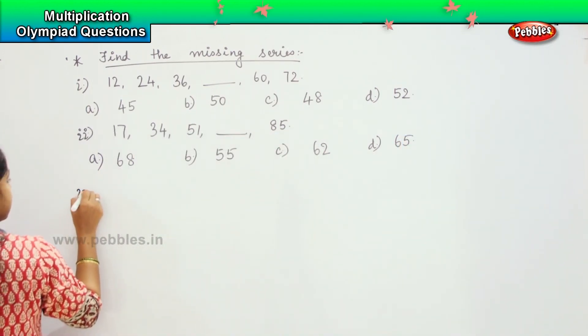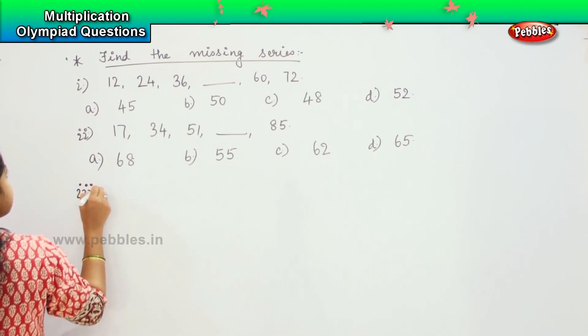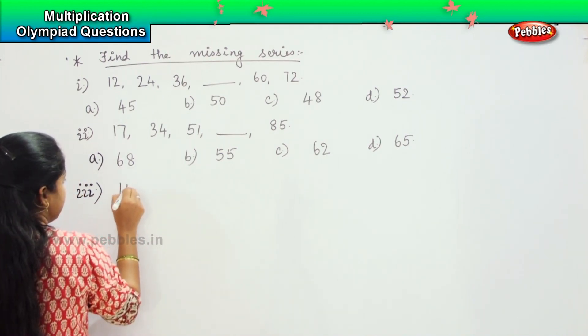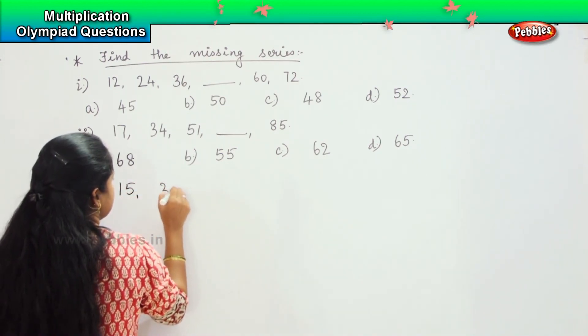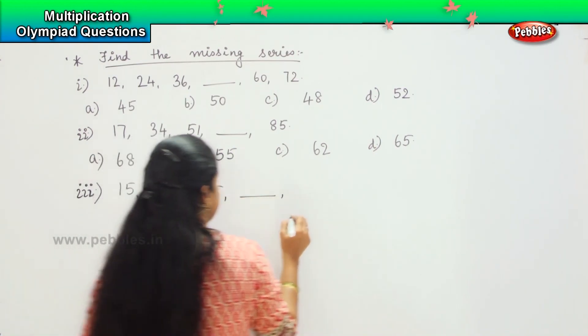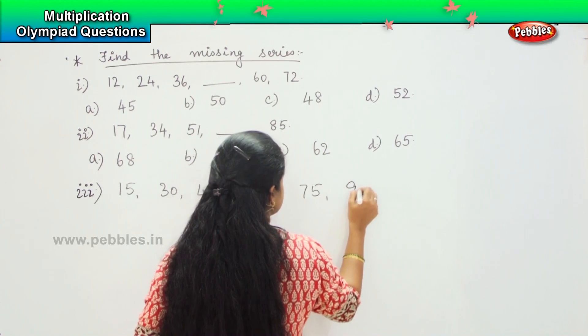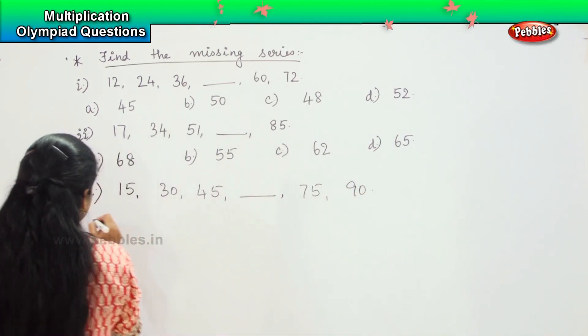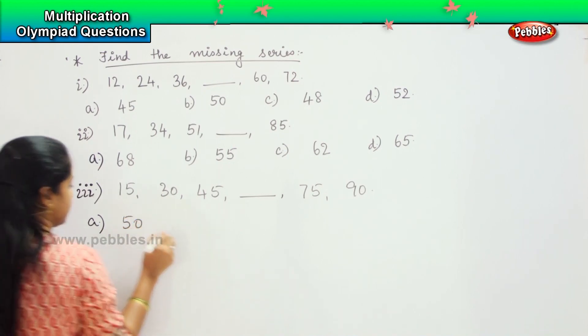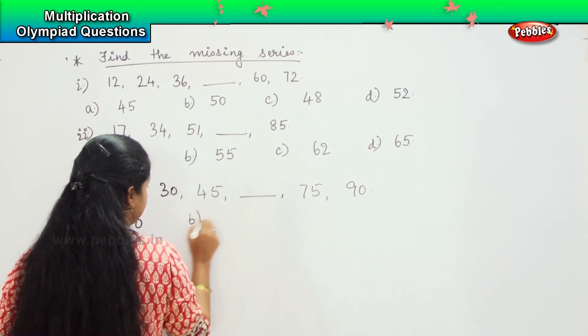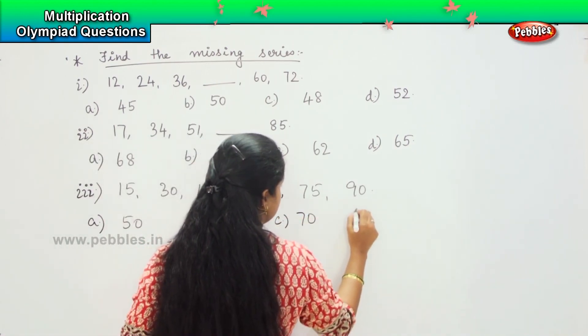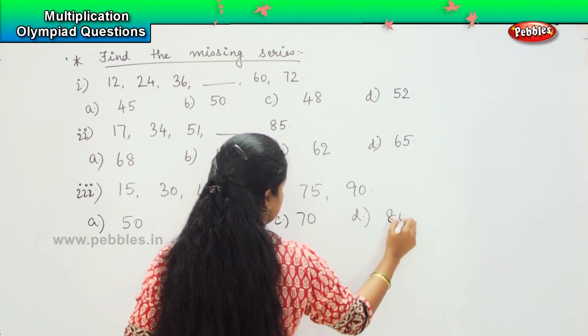Your third one says 15, 30, 45, dash, 75, 90. Your options are A: 50, B: 60, C: 70, and D: 80.